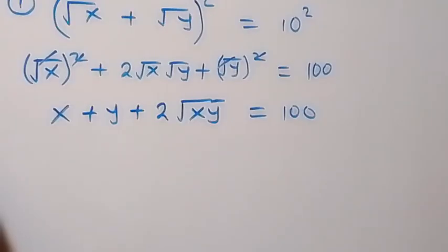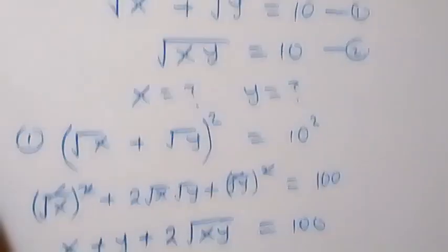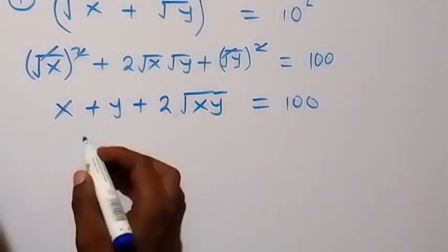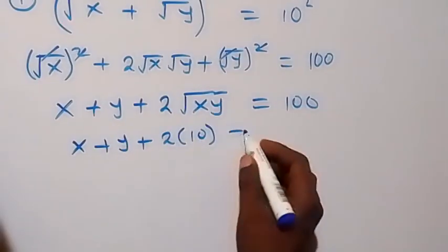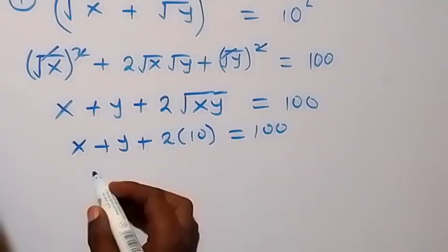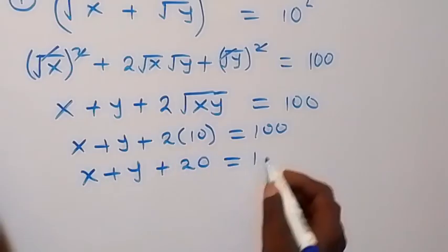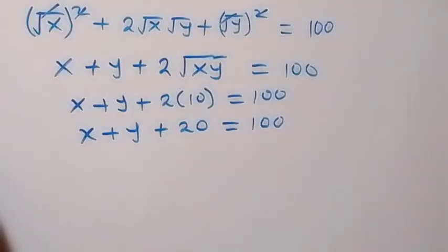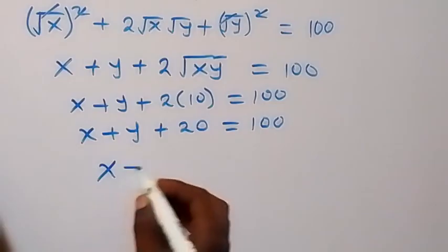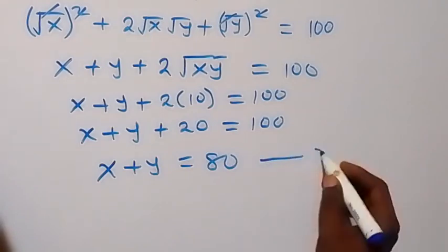Then in the next step, we can substitute root xy from equation 2, given root xy to be equal to 10. So that means here we are going to have 10. So we have x plus y plus 2 times 10 equals to 100. And from here, that's x plus y plus 20 equals to 100. Taking 20 to the other side, 100 minus 20, that's 80. So we have x plus y equals to 80. Let's label this one as equation 3.